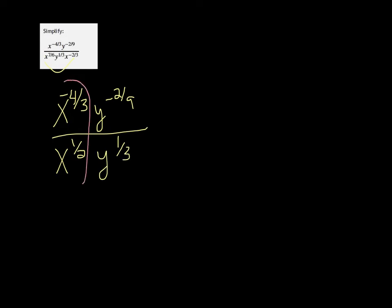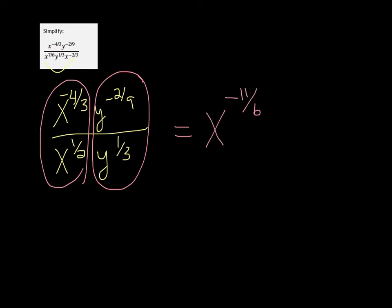Now we can combine the x's from the numerator and denominator, and the same with the y's. In that case you subtract their exponents, so we do negative four-thirds minus one-half. That's x to the negative eleven-sixths. I'm doing the fractions in my calculator, and that's what you should do as well.